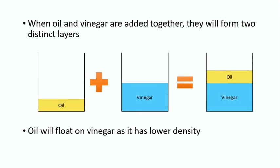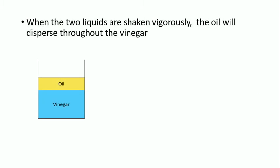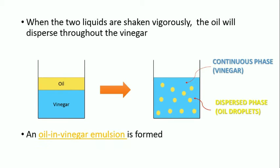When oil and vinegar are added together, they will form two distinct layers. Oil will float on vinegar as it has lower density. When the two liquids are shaken vigorously, the oil will disperse throughout the vinegar. An oil and vinegar emulsion is formed.